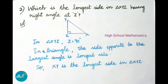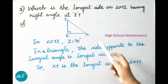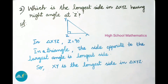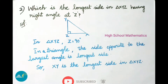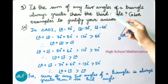Question number two: which is the longest side in triangle XYZ having right angle at Z? Solution: in triangle XYZ, angle Z equals 90 degrees. We know in a triangle the side opposite to the largest angle is the longest side. So from the triangle, XY is the longest side. Therefore XY is the longest side in triangle XYZ.